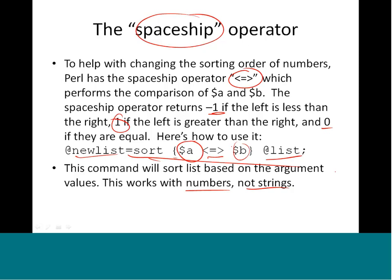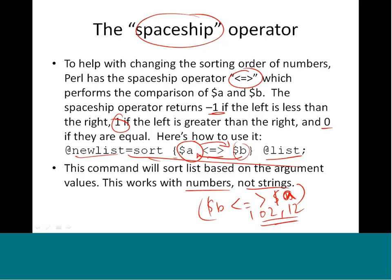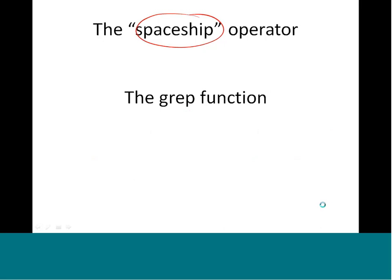To reverse the sort - sorting from highest to lowest - all we do is swap $a and $b: sort { $b <=> $a } list. This will sort the list from the biggest value to the lowest, so for example 102 comes before 12, ordered by numerical value.